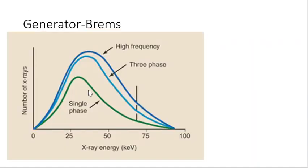Here are the effects on the Bremsstrahlung spectrum. Going from single-phase to three-phase, the peak of the curve representing average energy shifts toward the high-energy side and the height increases, indicating greater output. Going from three-phase to high frequency, the same pattern continues — the peak shifts further toward high energy and output increases slightly.